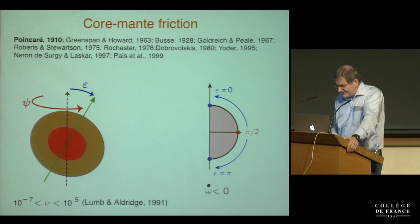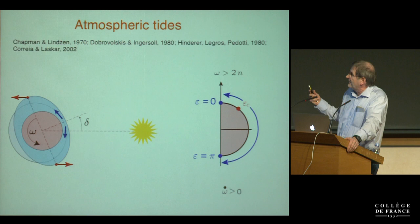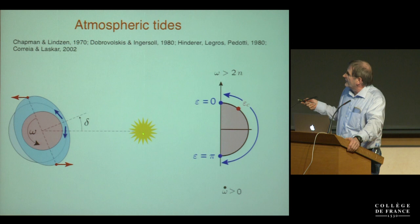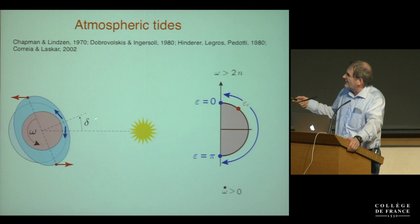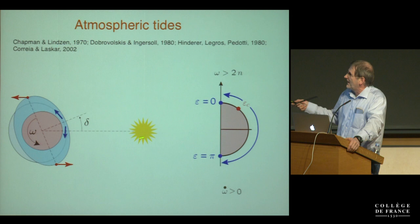Then there is the atmospheric tide, which is especially important for Venus where you have a very large atmosphere about 90 times that of the Earth. The Sun heats the atmosphere, inducing a redistribution of mass with a bulge different from the body tide. In the body tide the bulge points toward the Sun, but here it is perpendicular to the Sun's direction with an offset slightly in advance — creating an accelerating torque that spins up the planet's rotation.